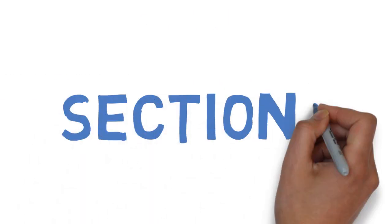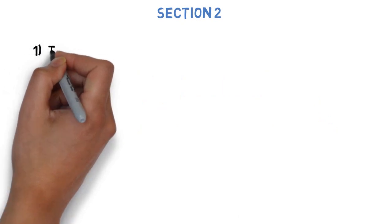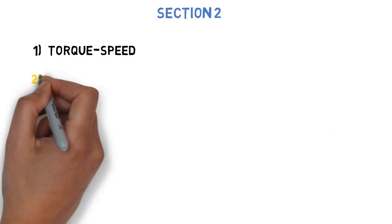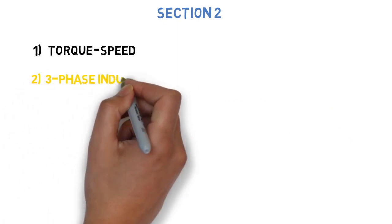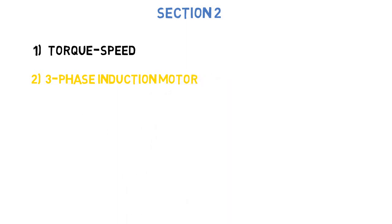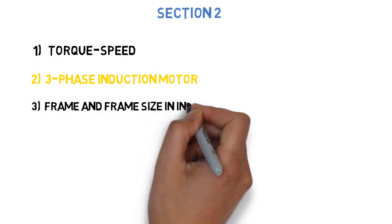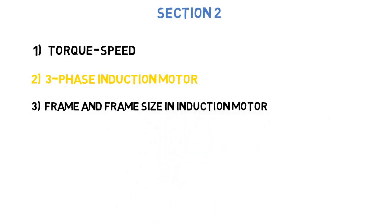Let's go to section two. The first question is write the numerical for torque speed characteristics in braking. Next question is derive equivalent circuit diagram for three phase induction motor. Next question is what is the frame and frame size in case of induction motor. Draw a figure showing the structural dimensions and standard frame. This can come for 5-10 marks.